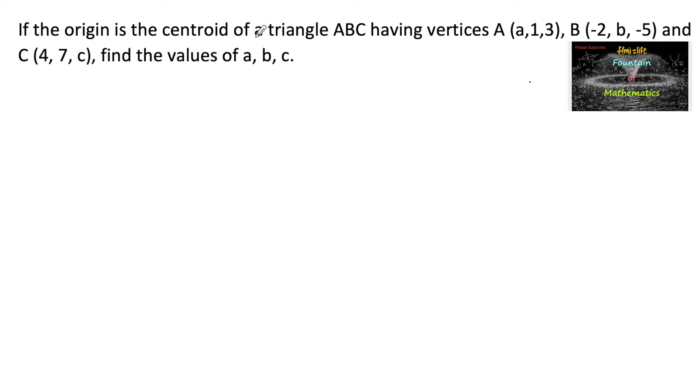If the origin is the centroid of a triangle ABC having vertices A (a, 1, 3), B (-2, b, -5), and C (4, 7, c), then we need to find the values of a, b, c.